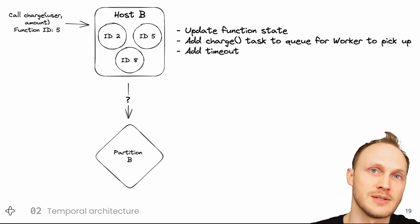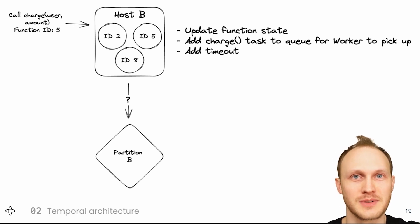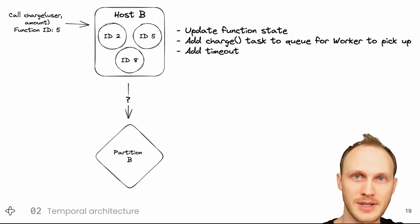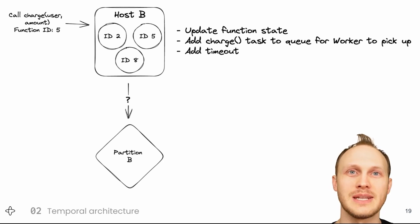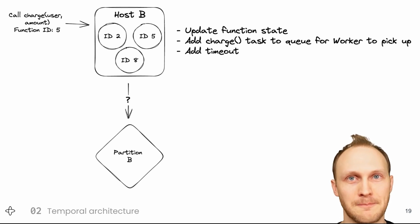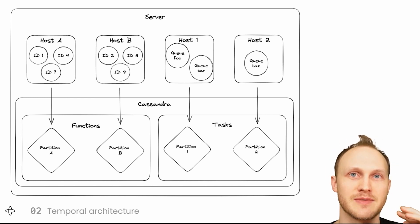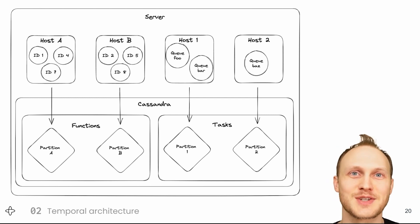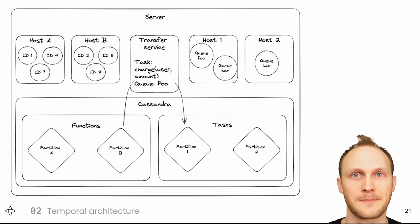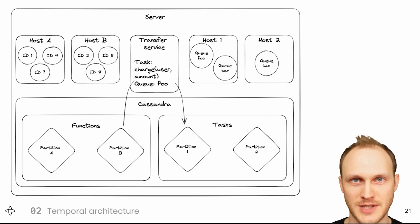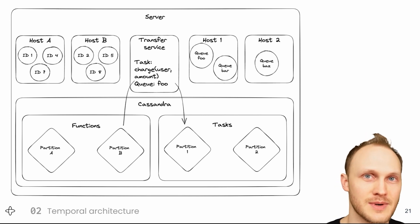An issue with having the tasks on each partition is query performance. With Cassandra, schema design follows your query patterns, versus relational databases where you can generally start with a schema and query arbitrarily. When we're thinking of the query "give me the next task on queue foo", we would need to check all of the partitions because they're partitioned by function ID, not by queue name, and that's not scalable. So we have a separate table called tasks on the right, partitioned by queue name, and a separate service for responding to queue queries. We have a service that moves tasks from the functions table partitions on the left to the queue table on the right, and it takes care of retrying and deduping. This is the transactional outbox pattern, and the queues on the left are also called transfer queues. A single queue can have a load higher than a single host can handle, so we shard the hosts on the right further beyond just queuing.